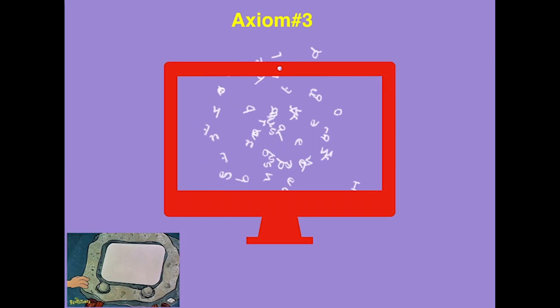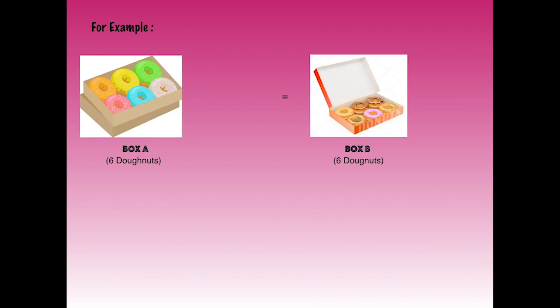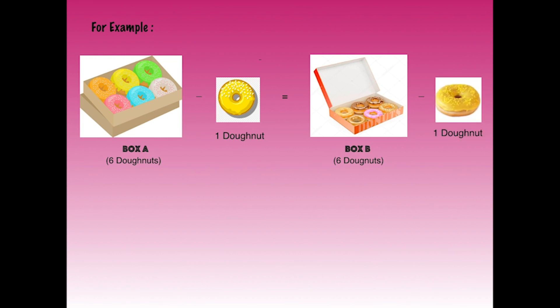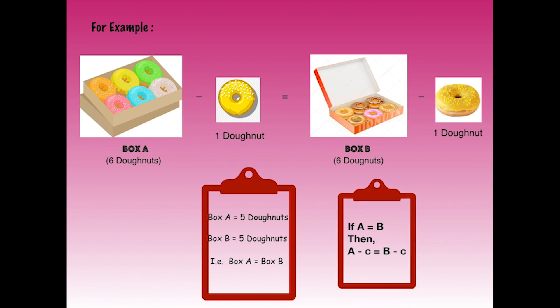Next, if equals are subtracted from equals, then the remainders are equal. For example, we have two boxes — box A and box B — each with an equal number of donuts, that is six. If we remove one donut from each, we are left with five donuts in each box. So the number of donuts in box A equals the number in box B. This implies: if A = B, then A − C = B − C. Just like the previous axiom, C must be equal on both sides — for example, A − 4 = B − 4.